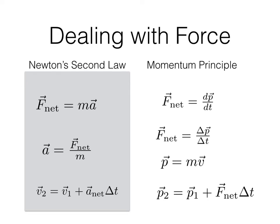This is the way I like better — using the momentum principle. It's technically the same thing at this level. The net force is the change in momentum over the change in time, where momentum is mass times velocity. So I can do the momentum update formula: based on delta-p over delta-t, solving for delta-p gives p2 equals p1 plus F-net times delta-t, and then I can calculate the velocity to find the position.